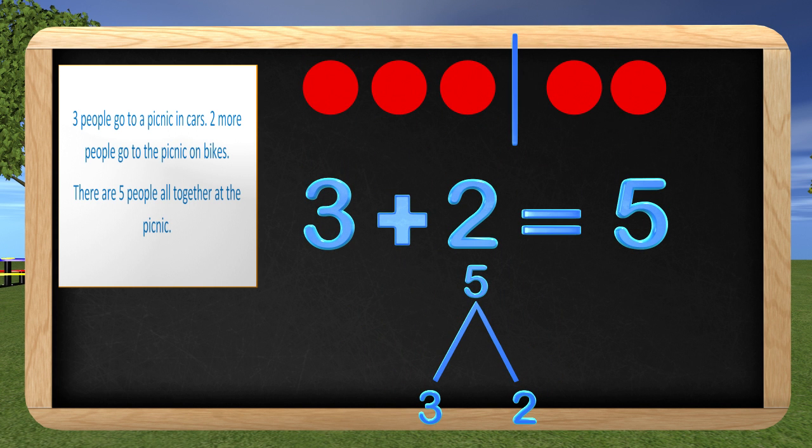Wow, guys, look at this. We now have three different ways of showing the word problem. We have a circle drawing, we have an equation with numbers, and we also have a math mountain. This is awesome! I can use these methods to help me figure out other word problems.